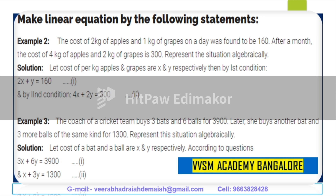Representing the situation algebraically: let the cost per kg of apples and grapes be x and y respectively. The first condition gives 2x plus y is equal to 160, and the second condition gives 4x plus 2y is equal to 300. These are the pair of linear equations.